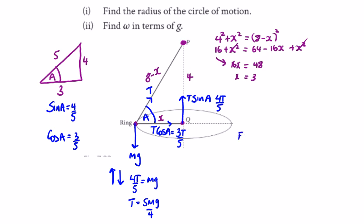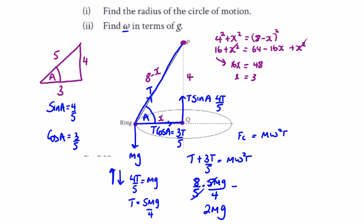The combined forces towards the center will be the centripetal force. We're dealing with ω, so mω²r equals 3T over 5. We have r as three, so this is 8/5 of T, which is 8/5 of 5mg over 4, leaving us with 2mg. That equals 3mω².